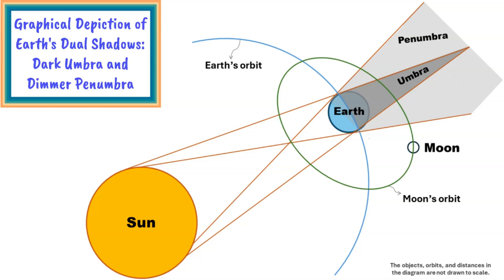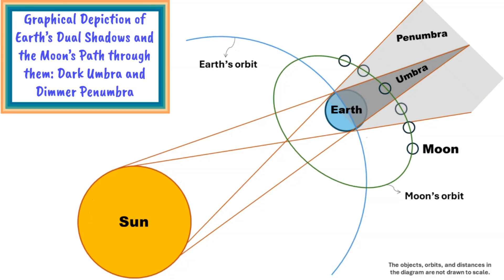Conversely, the penumbra, the outer part of the shadow, is where sunlight is only partially obstructed. It's important to note that the sizes, orbits, and distances of the Sun, Moon, and Earth are not depicted to scale.